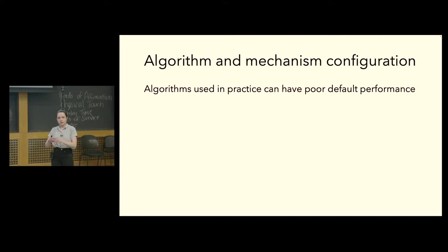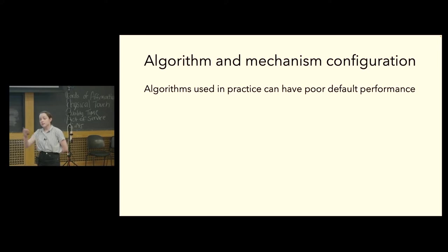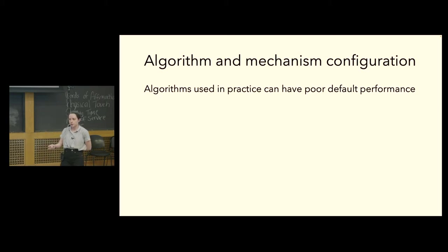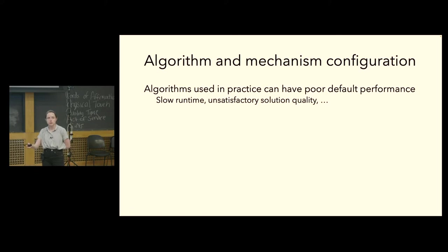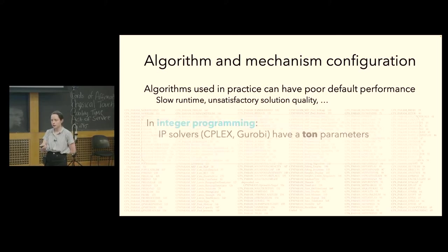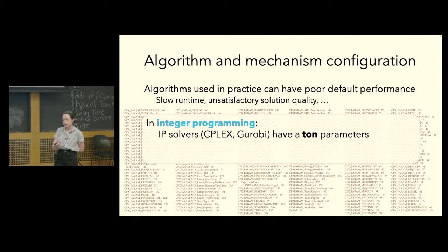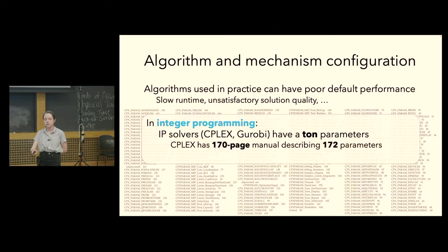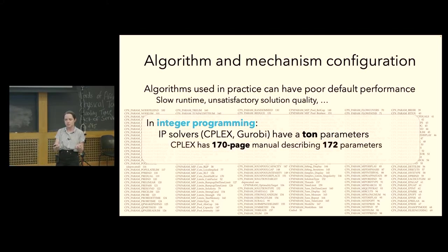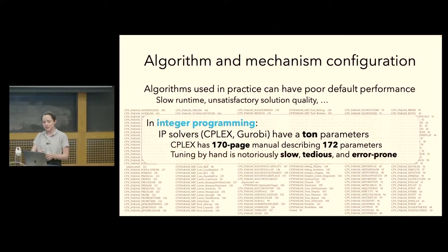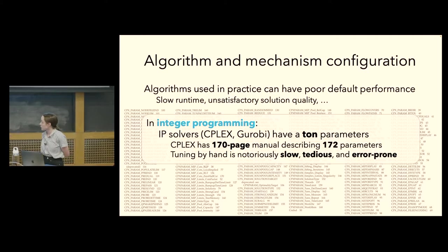Algorithms used in practice are typically very broadly applicable, able to solve problems across diverse domains. But these broadly applicable algorithms can often have unsatisfactory default out-of-the-box performance, with slow run times and poor solution quality. This is perhaps best illustrated by integer programming, where IP solvers like C-Plex and Gurobi come with a ton of tunable parameters. Tuning these parameters by hand is a notoriously slow, tedious, and error-prone process.